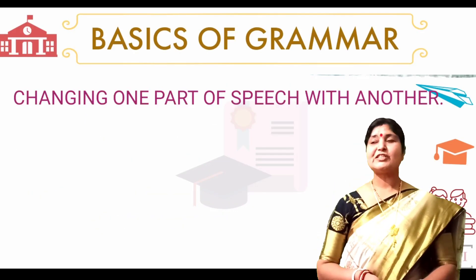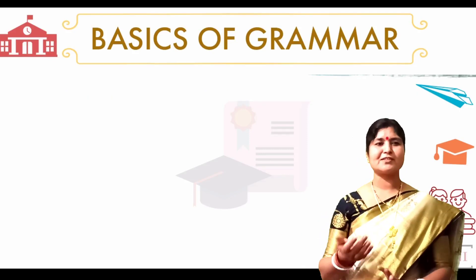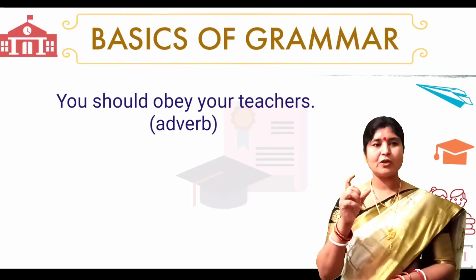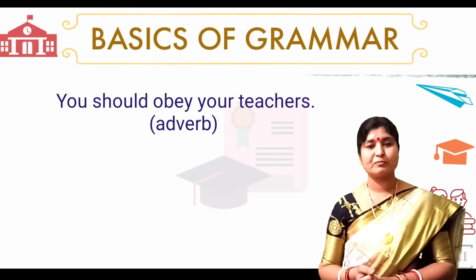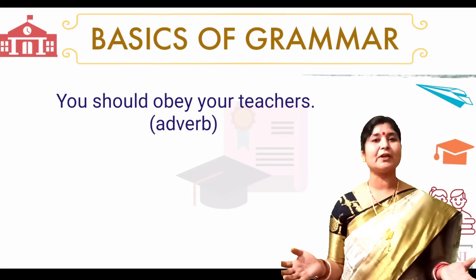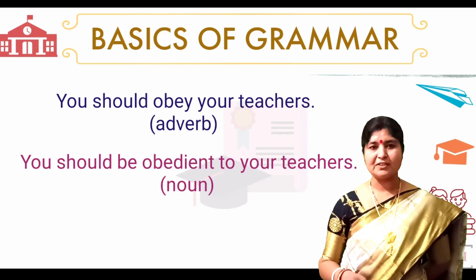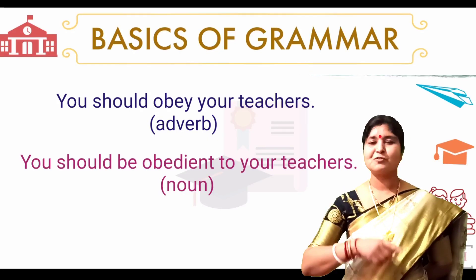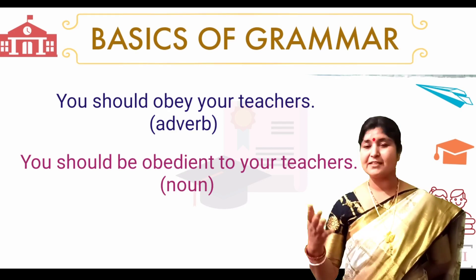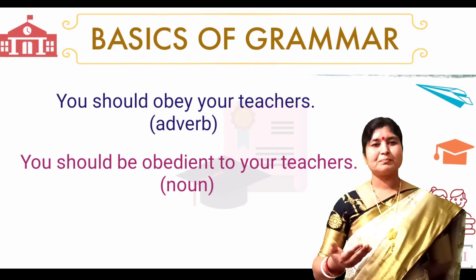Next is changing one part of speech to another. For example: 'You should obey your teachers' — here 'obey' is used as a verb. If we use it as an adjective without changing the meaning: 'You should be obedient to your teachers.' We will do some questions on this.